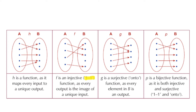The last box is function P, which is a bijective function. 'Bi' means two, so bijective means it is both injective and surjective. Instead of saying a function is injective and surjective, we can simply say it is bijective. Every X value has a unique Y value and all Y values are used.